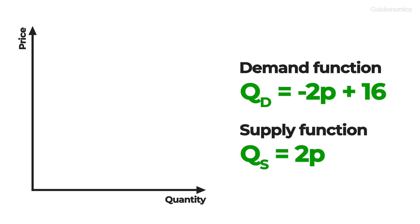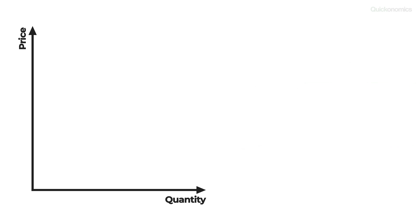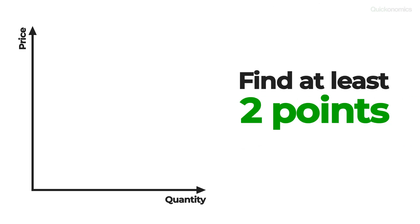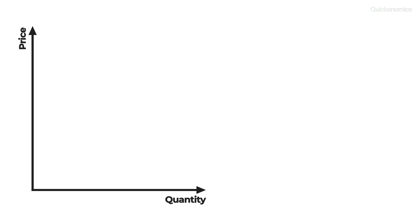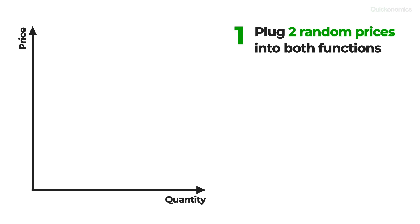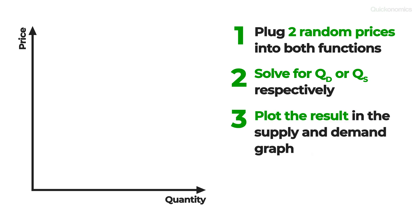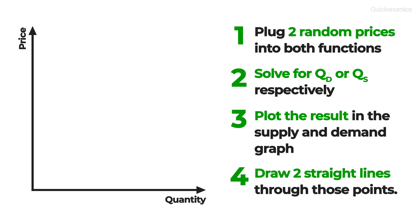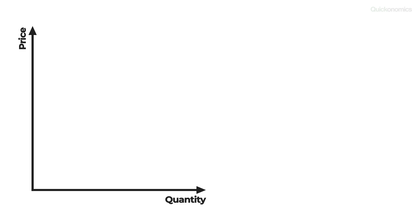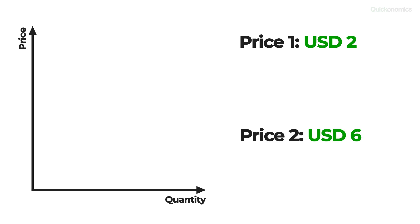Let's assume that the demand function for candy bars is quantity demanded equals minus 2 times price plus 16, and the supply function is quantity supplied equals 2 times price. To draw our supply and demand curves, we need to find at least two points on each curve. We can simply plug two random prices into both functions, solve for quantity demanded or quantity supplied respectively, plot the results, and connect the dots to get the curves. Let's pick $2 and $6 as our random prices.